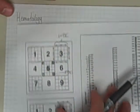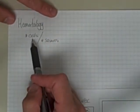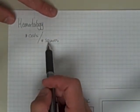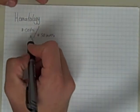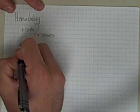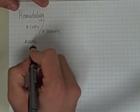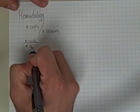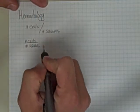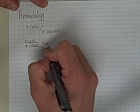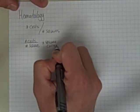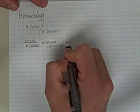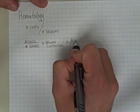So typically what we're dealing with is a number of cells and a certain number of squares. So the first method, which is probably what you've learned in hematology, is where you take the number of cells that you have divided by the number of squares, whether they're white blood cell or red blood cell squares, times a volume correction times your dilution factor.